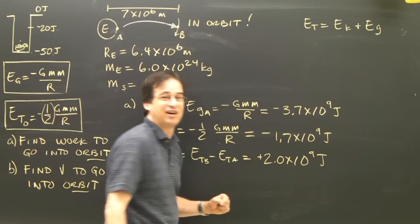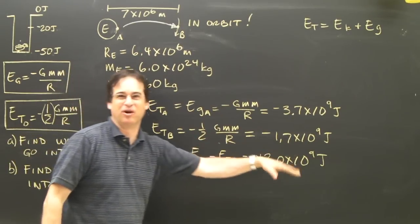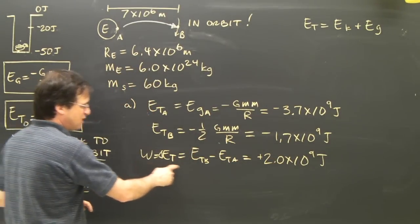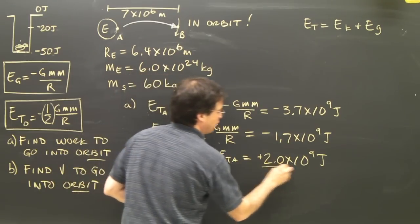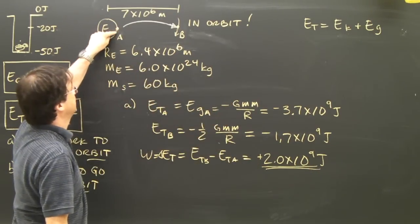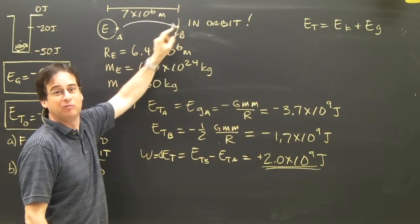And I know some of you are doing these calculations and saying, my number's a little bit off. I've done some rounding. I'm just trying to make the point clear of what we're doing. So this is how much work it takes. I have to add that much energy to the object here to get it to go up in there and it will go into orbit.